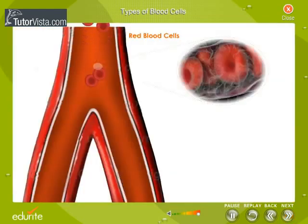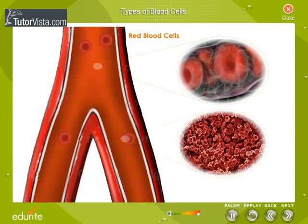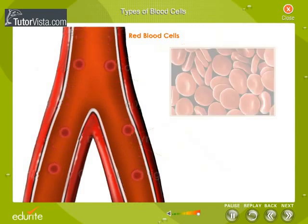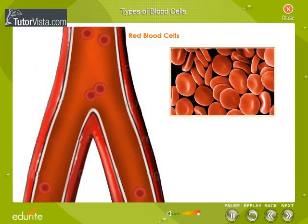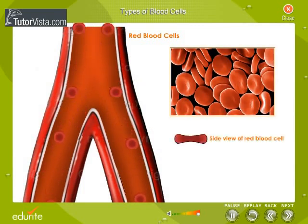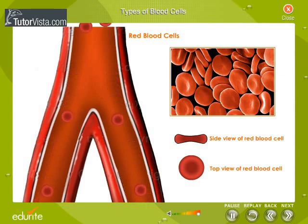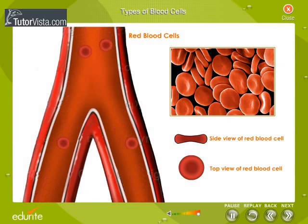It is the red blood cells that give the red colour to our blood. Red blood cells are red because they contain a protein called hemoglobin, which is bright red in colour. They are biconcave disc-like structures. Mature cells lack a nucleus. These cells are highly flexible, allowing them to squeeze through the tiniest capillaries.